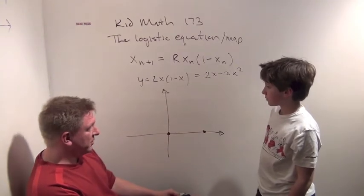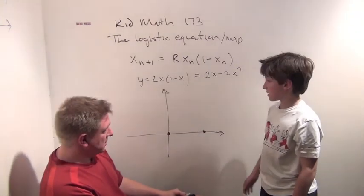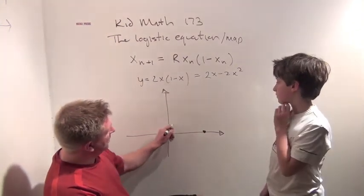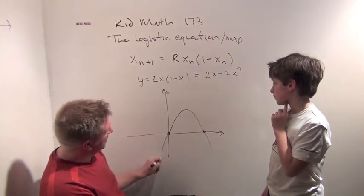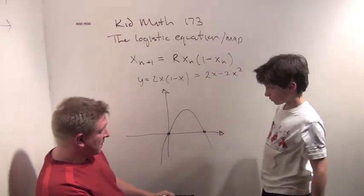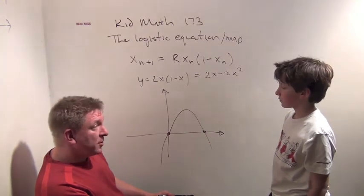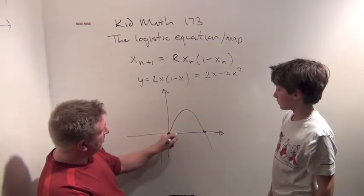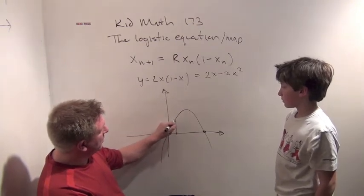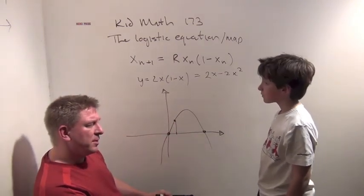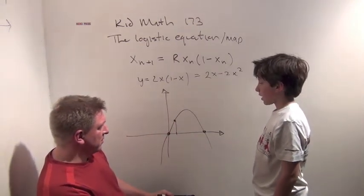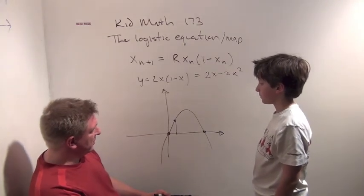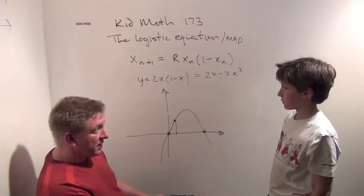And does this quadratic open up or does it open down? It opens down. So I get a parabola that goes down like that. And when I put in values of this equation, like when I put in a third, I go up. Do you remember what we got at a third? We got 4 ninths. Very good.